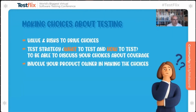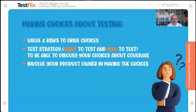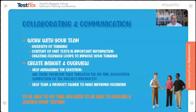Use those models and your knowledge of value and risk to drive your choices. Create test strategies — a test strategy is not a one-off thing; it's what you want to test and how you're going to do it. The more explicit it is, the better. By writing it down and showing it to others, you can discuss coverage choices with your product owner and team. Involve your product owner in making those choices. Talk to developers about unit testing — make sure you don't do things double. Create feedback loops to improve your thinking; show them your models and test cases.